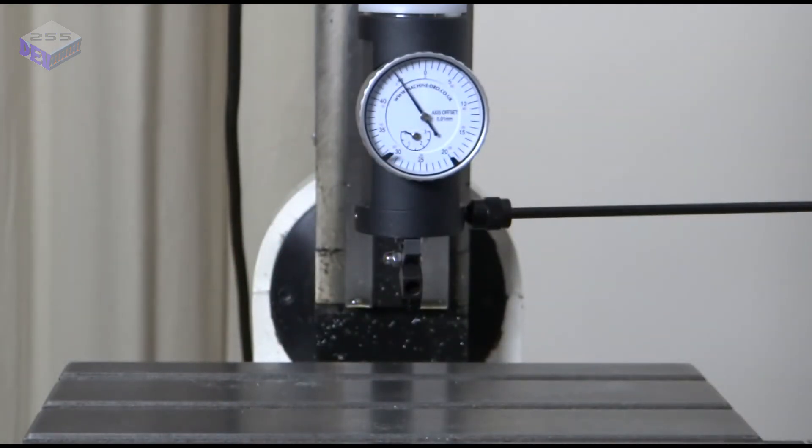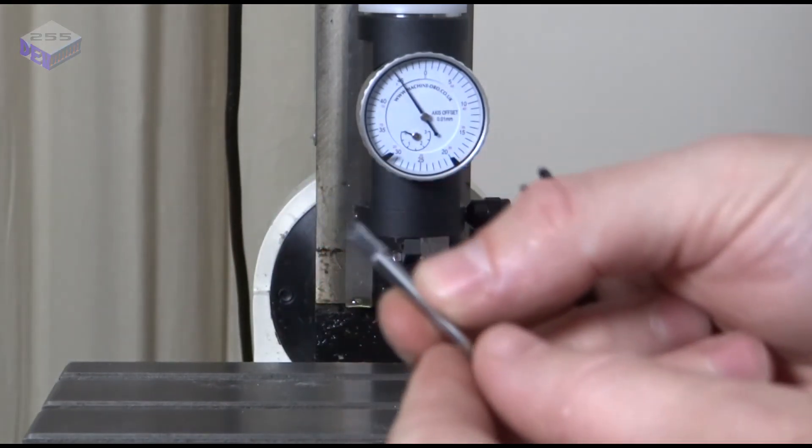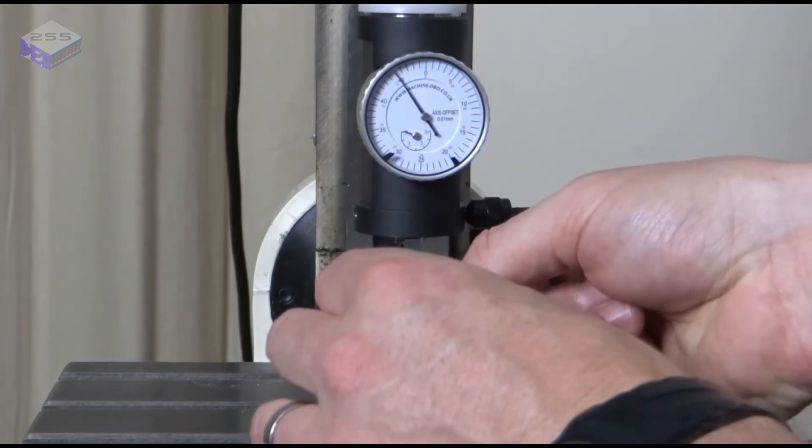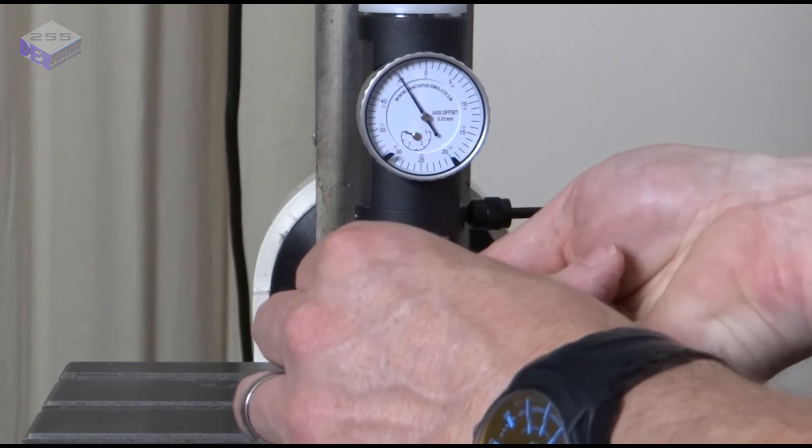So I'm going to use a shorter arm that comes in the set. Undo that one and put this one with its flat in the same position.